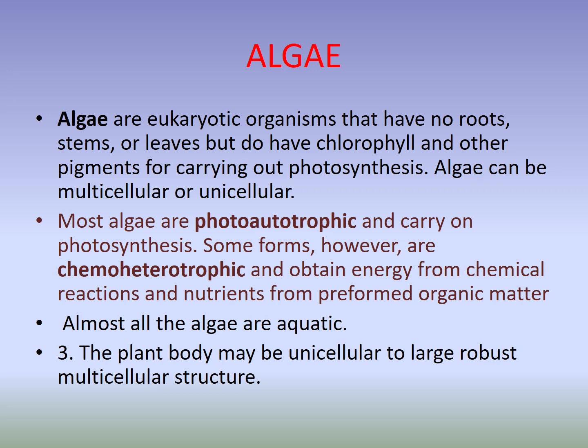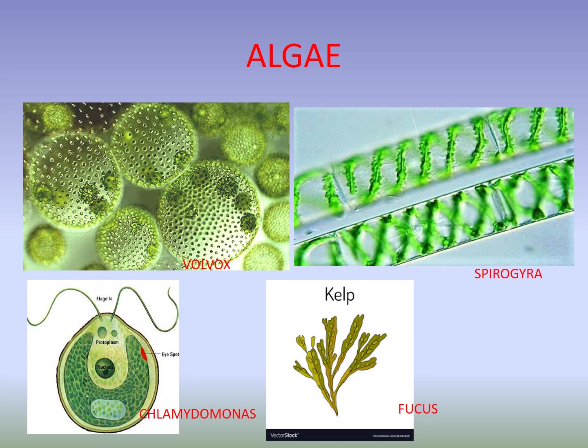Algae — another group of microorganisms. They are eukaryotic organisms. They do not have root, stem, and leaves; they are thallophytes — their body is not differentiated into true root, stem, and leaves. But they do have chlorophyll, which means they are able to perform photosynthesis. Most algae are photo-autotrophic, carrying on photosynthesis, but some are chemo-heterotrophic algae that obtain energy from chemical reactions inside their body. Almost all algae are aquatic. The plant body may be unicellular or large robust multicellular structures. Some common algae: Volvox, Spirogyra, Chlamydomonas, and Fucus.